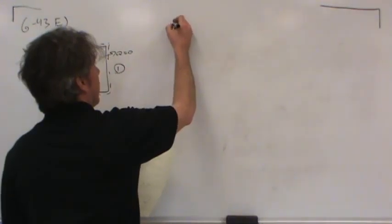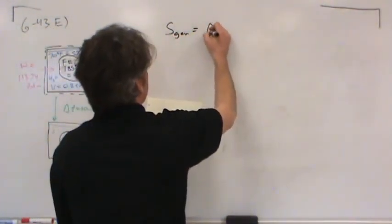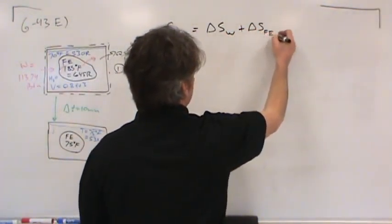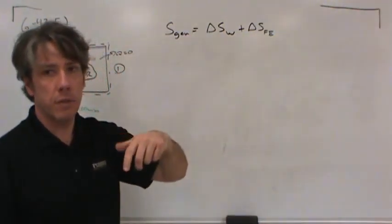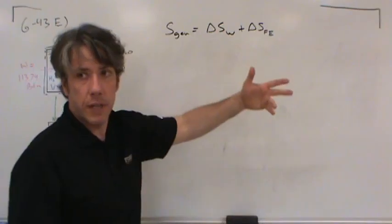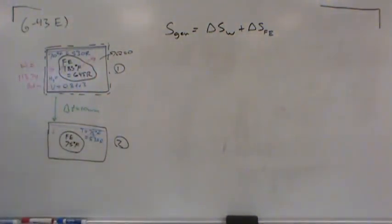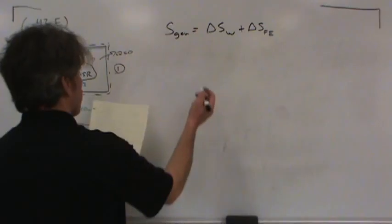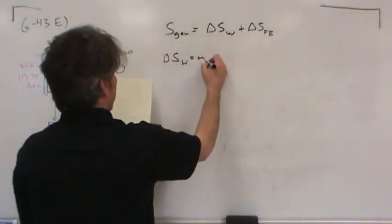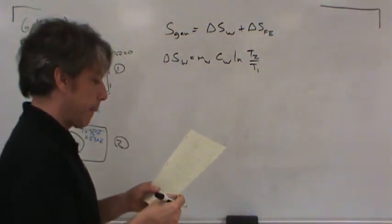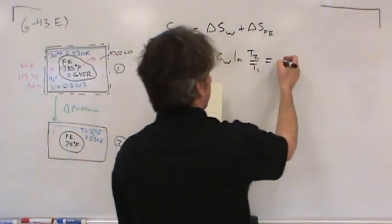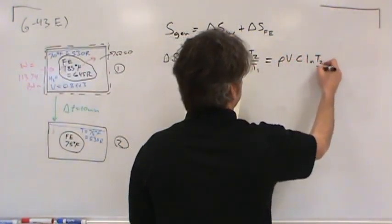The entropy generated equals the change in entropy of the water plus the change in entropy of the iron. The entropy change of the iron is negative (it loses entropy), and the entropy change of the water is positive. The claim is that the water's gain exceeds the iron's loss — the difference is the generated entropy. For a solid or liquid, the entropy change is: ΔS = m × c × ln(T2/T1).